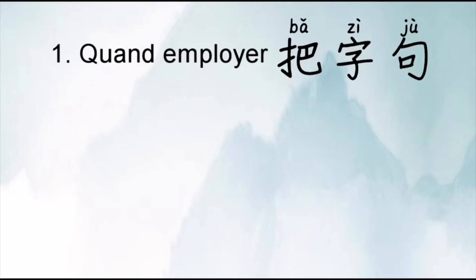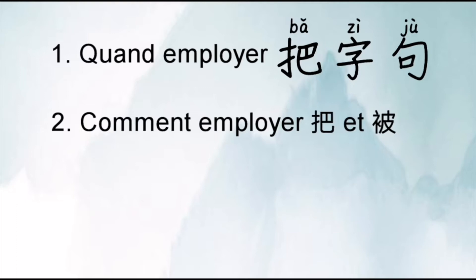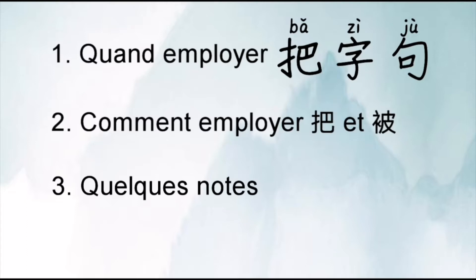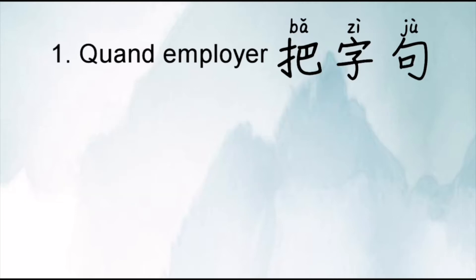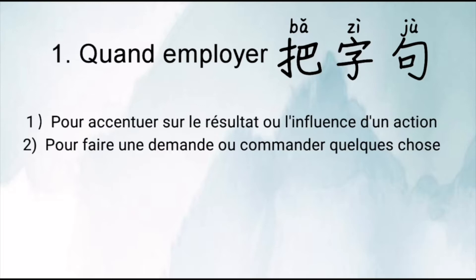Ce sujet, je vais vous expliquer en trois parties. Première partie, c'est pourquoi ou quand on doit employer BA ZI JU. Ensuite, comment employer BA ZI JU. Et troisièmement, quand on a employé BA ZI JU, quelles sont les choses auxquelles on doit faire attention. Commençons par le premier : BA ZI JU est surtout pour accentuer sur le résultat ou l'influence d'une action, ou alors pour faire une demande, voire commenter quelque chose.